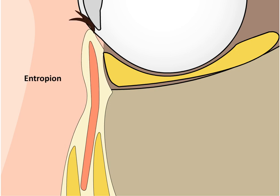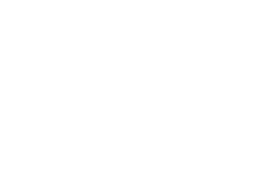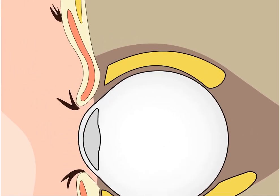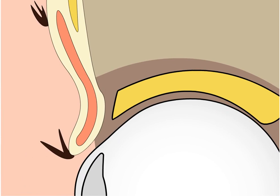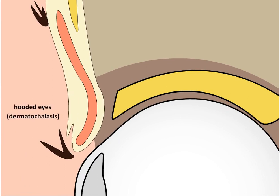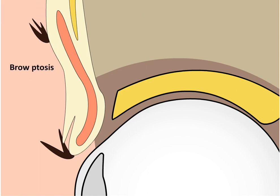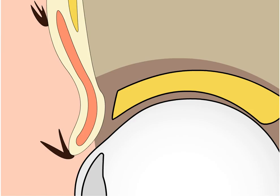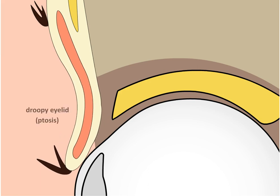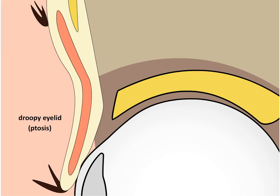These changes around the periocular region can contribute to a watery eye. In the upper lid, loss of skin elasticity and muscle tone can cause a hooding of the upper eyelid, called dermatochalasis. The retroorbicularis oculi fat pad, or fat pad under the eyebrow, can descend or lose volume, causing the eyebrow to droop. Attachments of muscles responsible for opening the eye can weaken, causing an eyelid droop or ptosis.